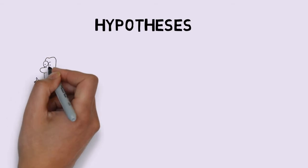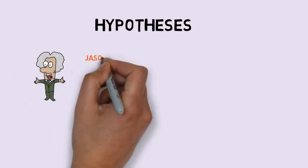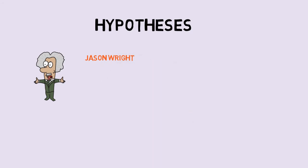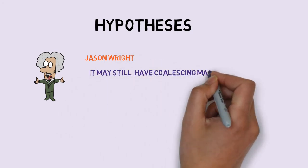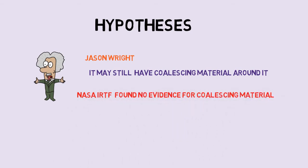There have been many hypotheses put forward by astronomers to explain this phenomenon. An astronomer named Jason Wright put forward a hypothesis that the star might still have coalescing material around it. However, the NASA IRTF found no evidence of coalescing material. Hence, his hypothesis was proven wrong.